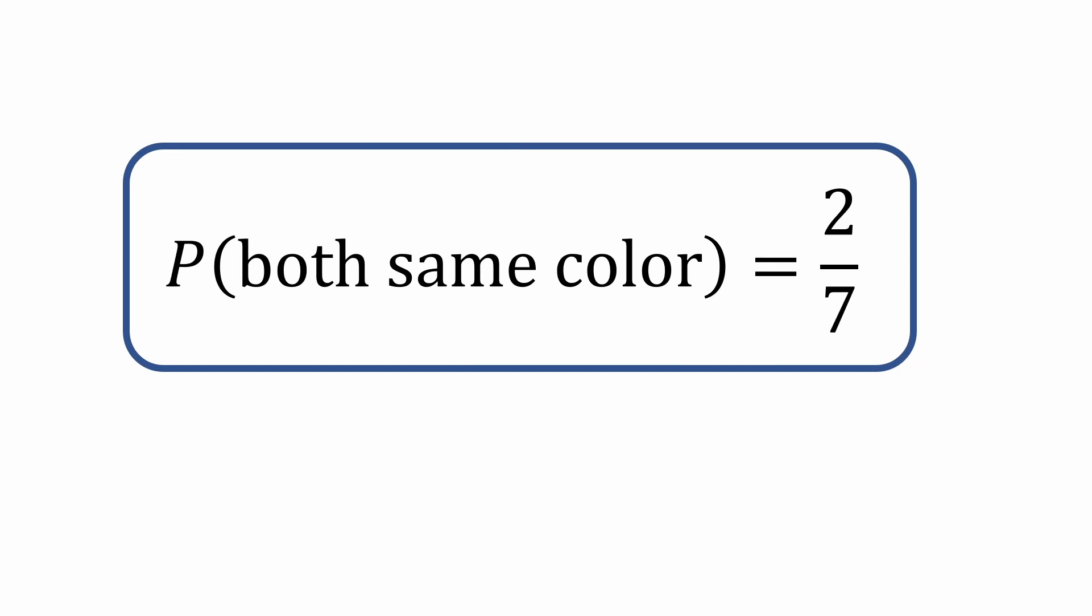And that's our answer. So on average, you have nearly a 30% chance of picking two balls of the same color at random.